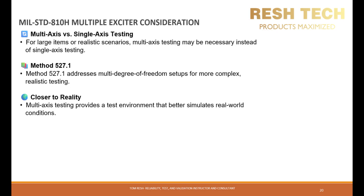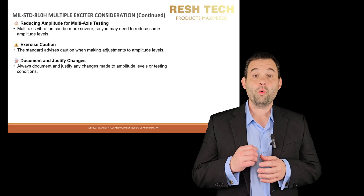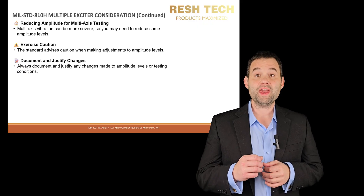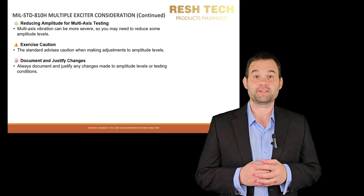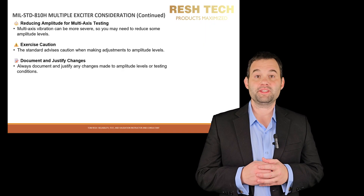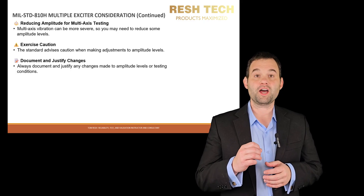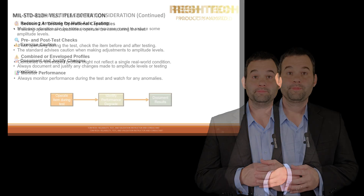Let's look at multiple exciter considerations. For very large items or more realistic scenarios, you might need multi-axis testing instead of single-axis. Method 527.1 addresses multi-degree of freedom test setups. While more complex, it can give you a test environment that's closer to reality. When performing multi-axis tests, you may need to reduce amplitudes as multi-axis excitation is more severe than traditional tests. The document does advise caution here, and you will need to document any changes made very clearly and thoroughly.